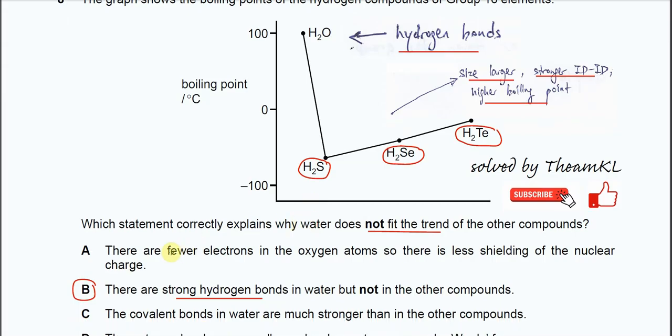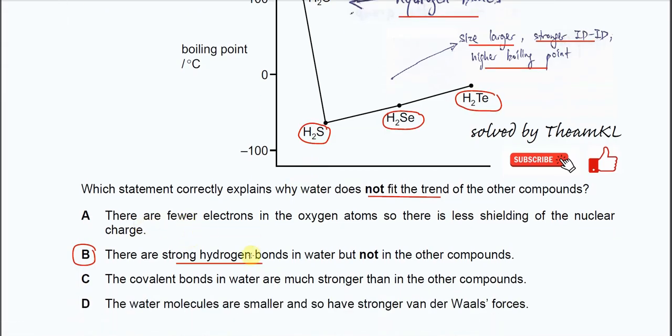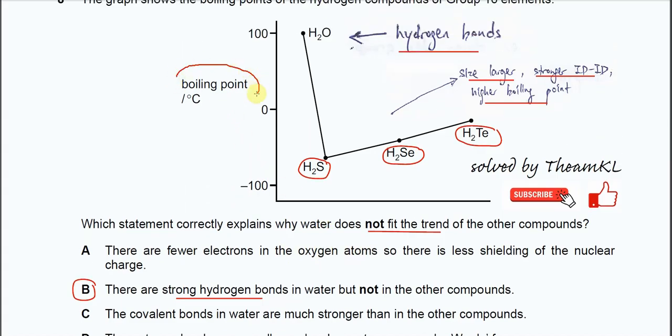For A, why this one is not the answer. There are fewer electrons in the oxygen atom so there is less shielding of the nuclear charge. It's actually not really wrong, but it's just doesn't fit the trend. Because the trend is about boiling point, so it's not about the less shielding of the nuclear charge. It's most likely the intermolecular force.